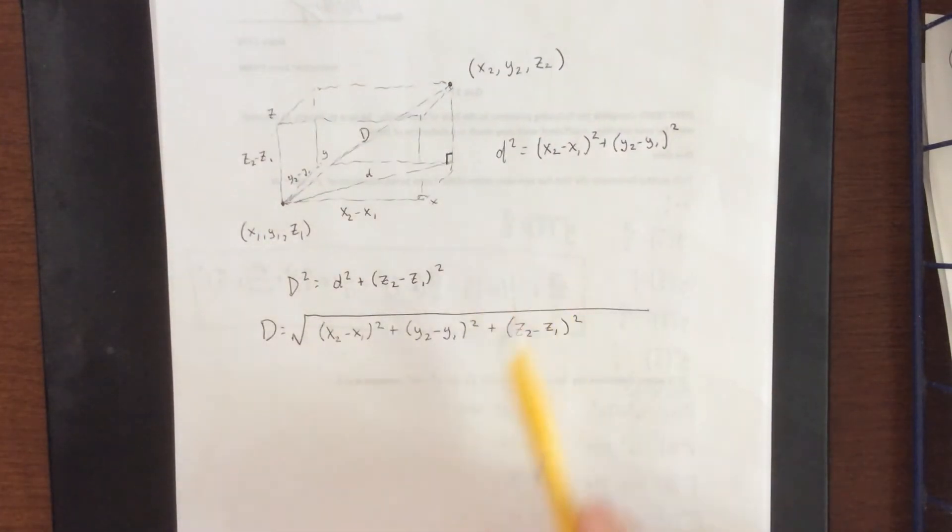It extends really nicely into higher dimensions by simply taking whatever the next variable is, finding the change in that variable, squaring it, and keeping it under the radical. Hypothetically, if we were to go up to four, five, or six dimensions, you could foresee how that takes place.